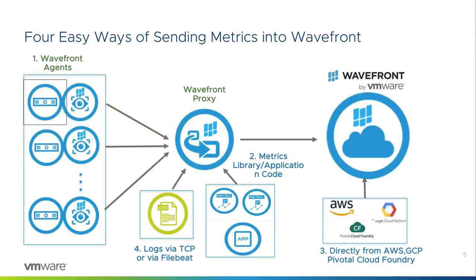There are four ways of sending metrics into Wavefront. We have agents that collect data from multiple sources — whether that's a Telegraf agent, StatsD, or particular integrations to technologies like Windows or Linux operating systems. We can take stats from logs you're monitoring. We can also take metrics directly from cloud platforms such as Amazon AWS, Google Cloud, or Azure — pulling those metrics straight from the cloud platform's collector into Wavefront.